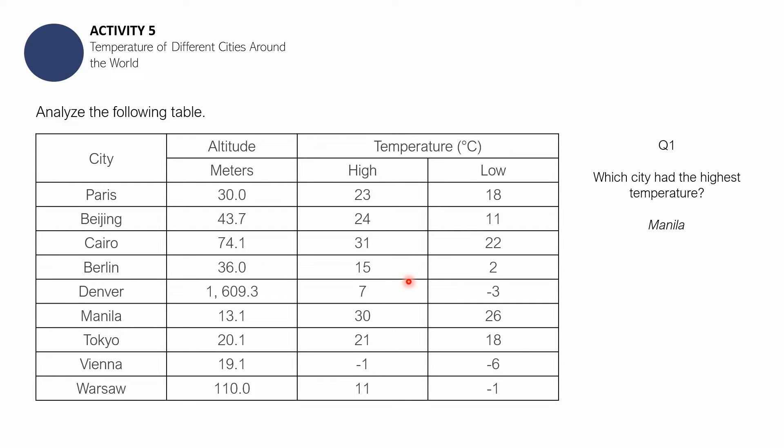Let us proceed with question number 2. The answer is it is the altitude and the closeness to the equator. The altitude of Manila is 13.1, and we need to review our previous books. It is very close to the equator, so those two factors played really important roles in the temperature of Manila.